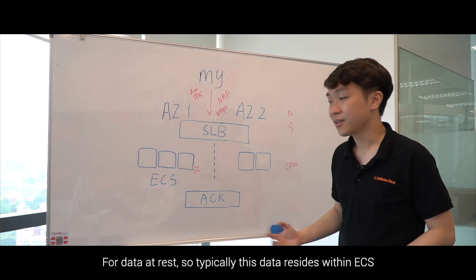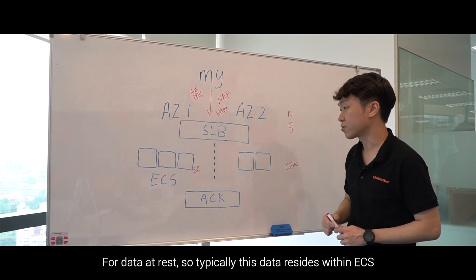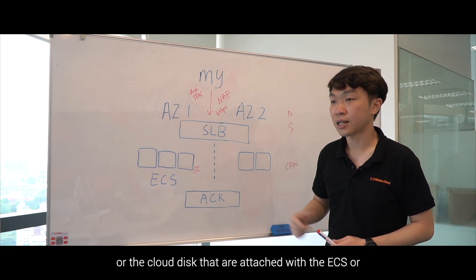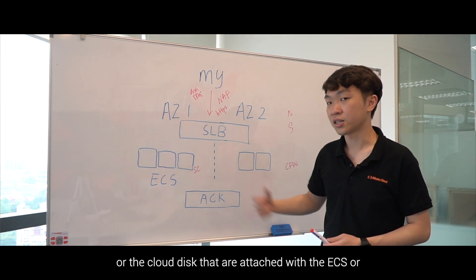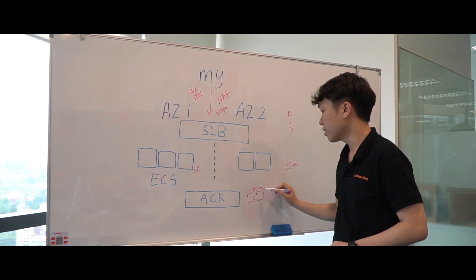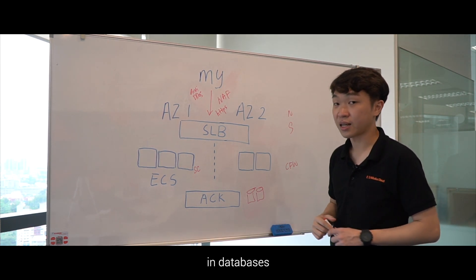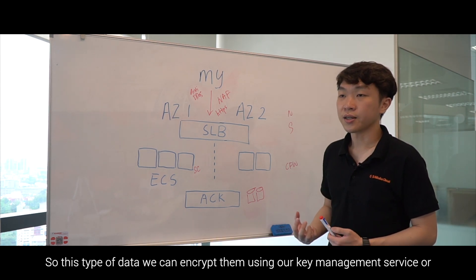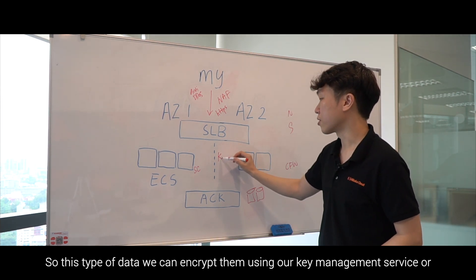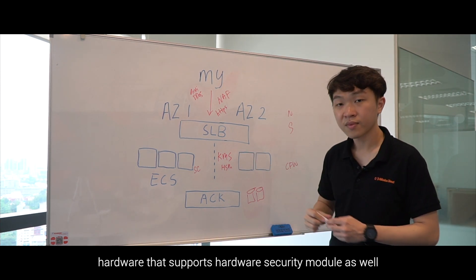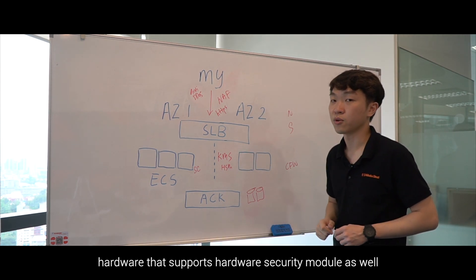For data at rest, this data typically resides within ECS, the cloud disks attached to ECS, or in databases. We can encrypt this type of data using our Key Management Service, or hardware that supports a Hardware Security Module.